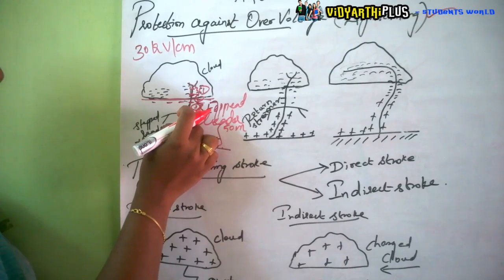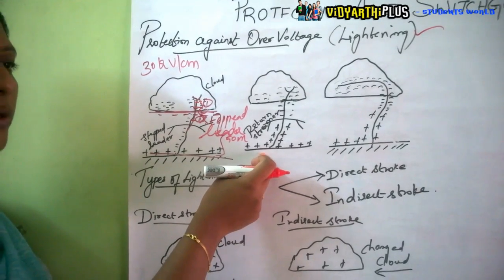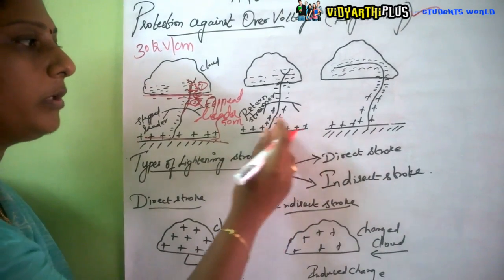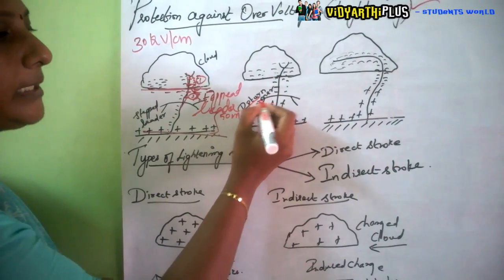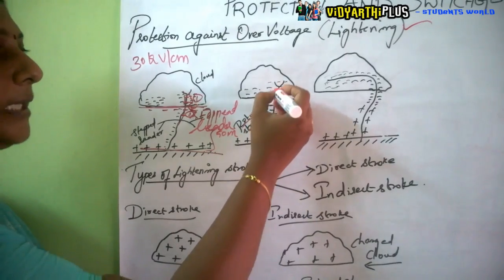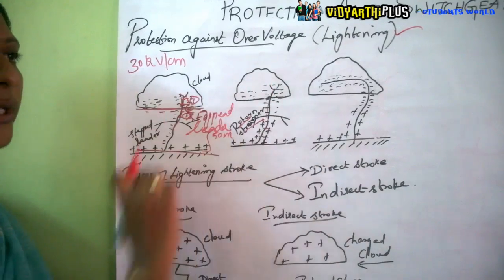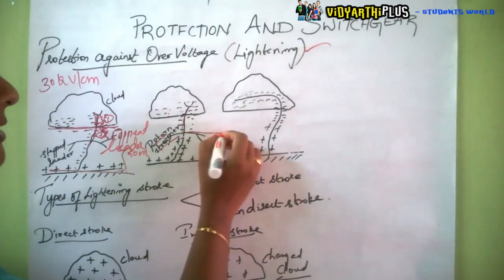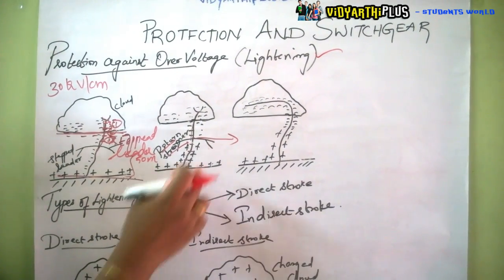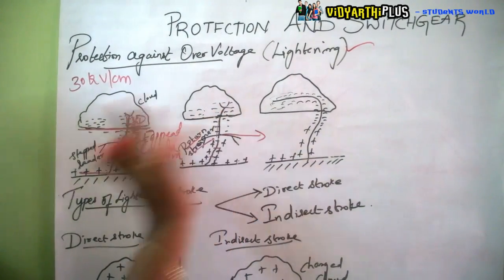As the stepped leader comes down from the negatively charged cloud, it attracts the opposite positive charge. The positive charge from the ground starts going up — called the return streamer — also moving in steps. At a certain point the stepped leader and return streamer join together, causing a bright flash of lightning.